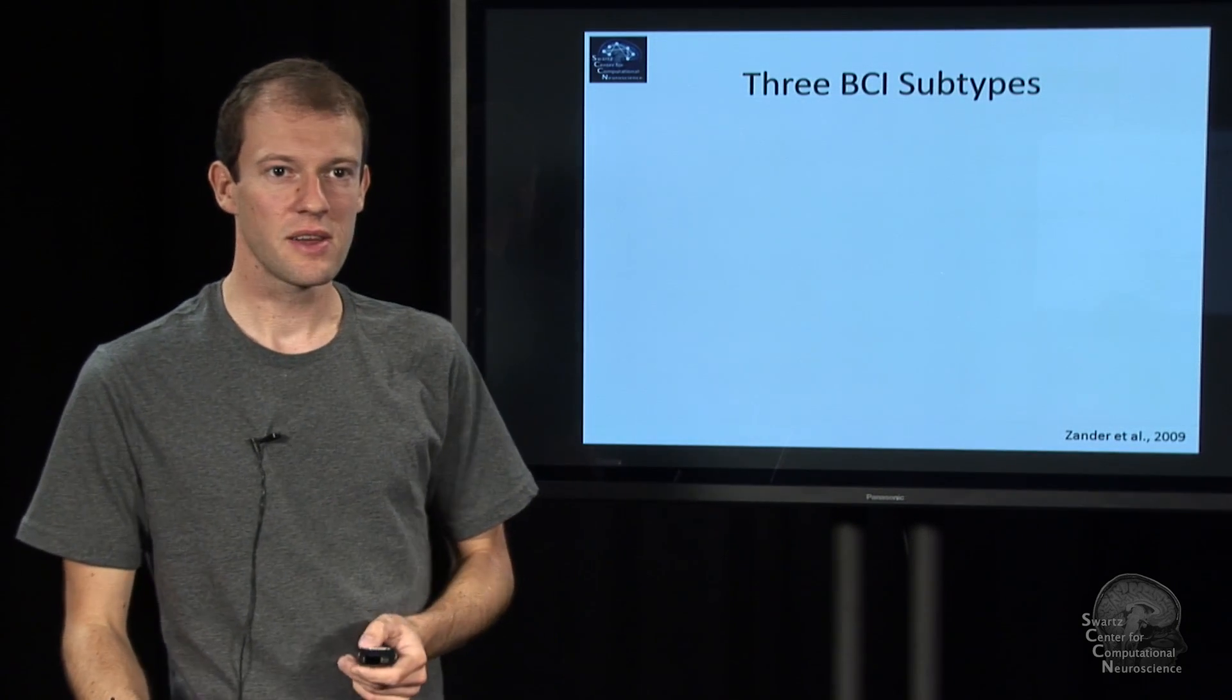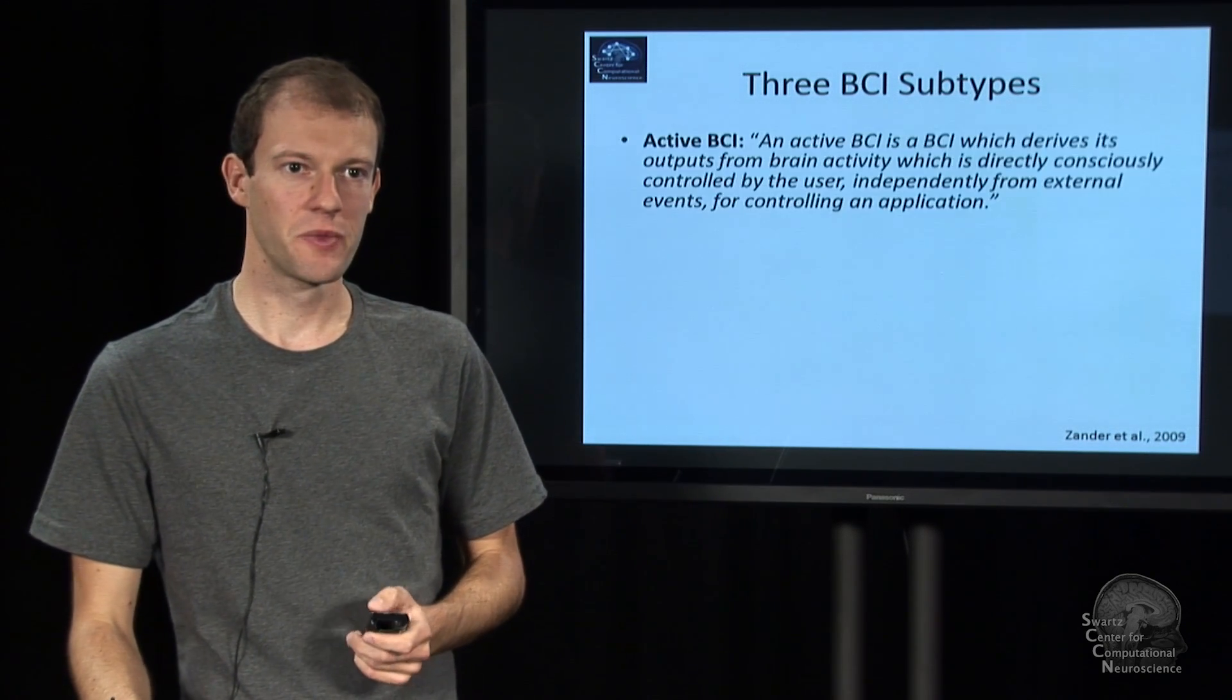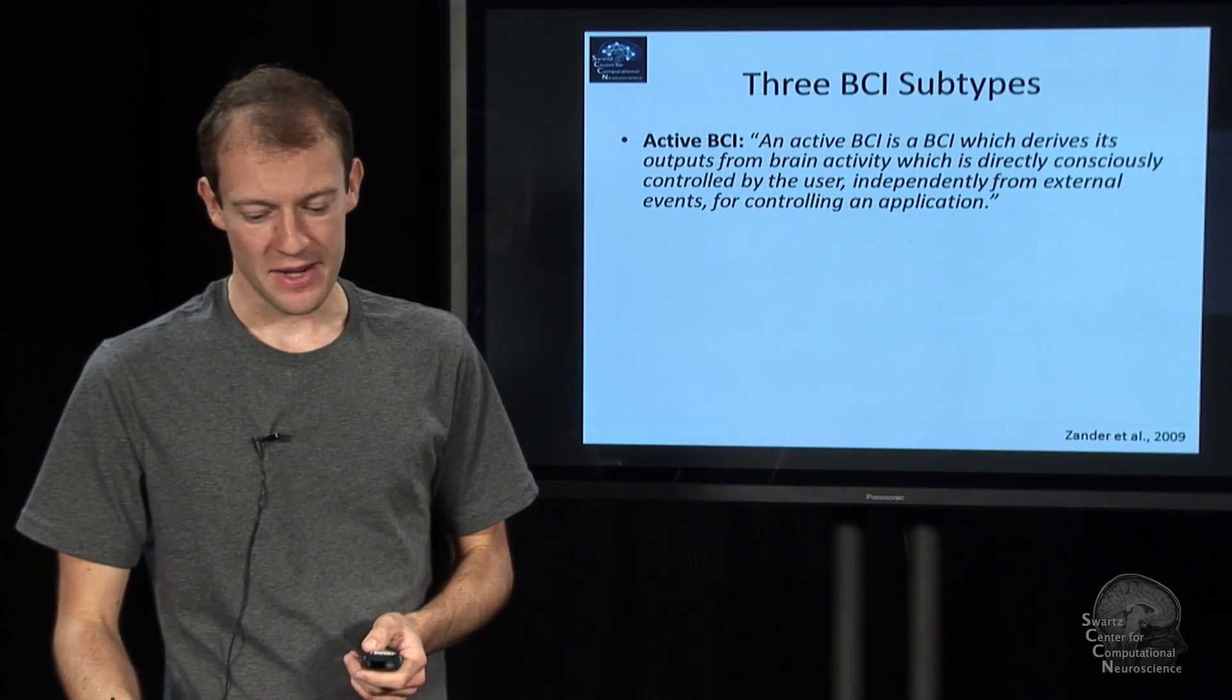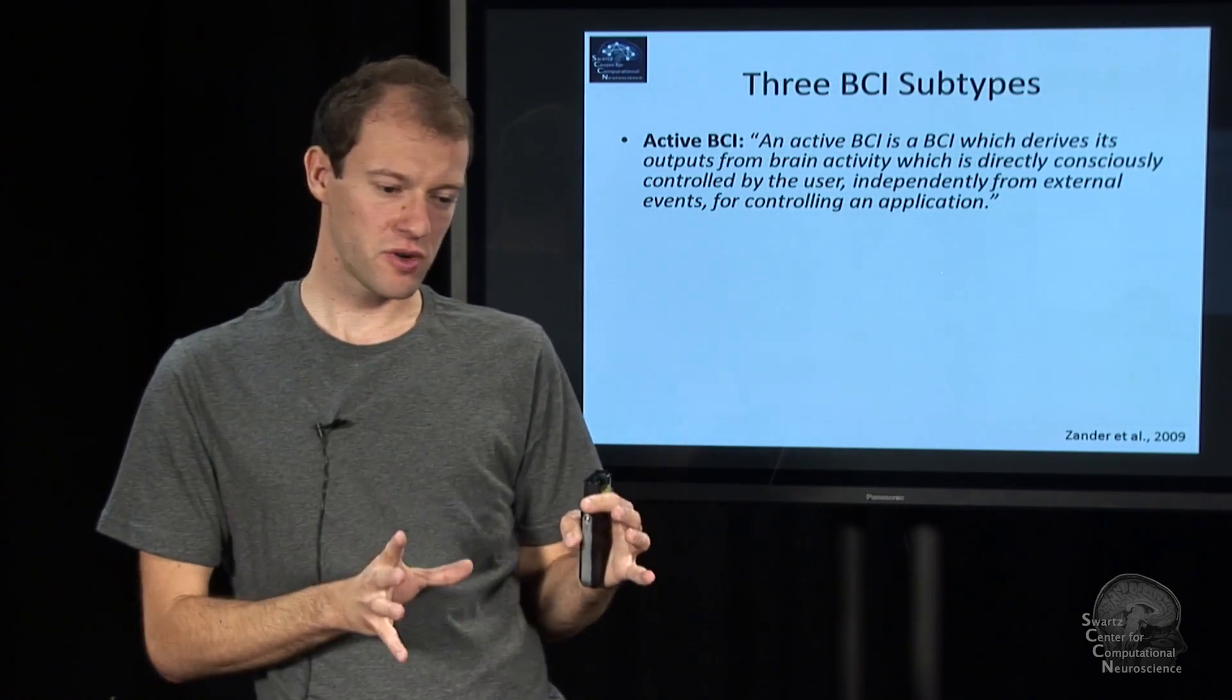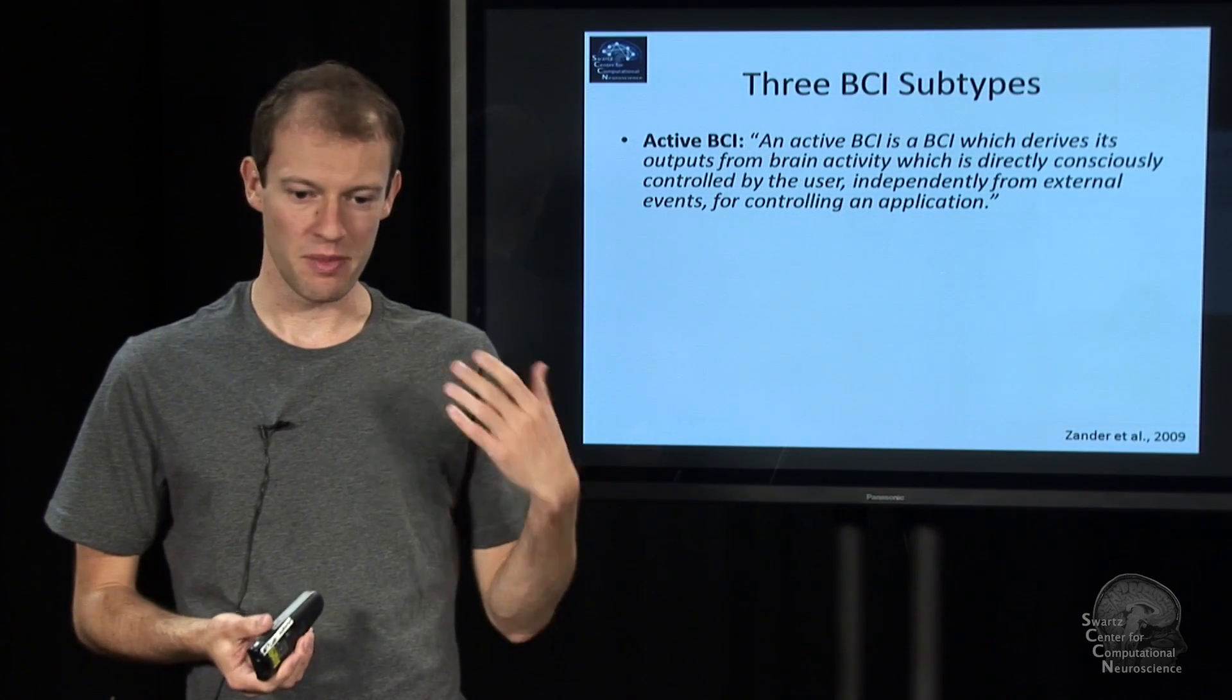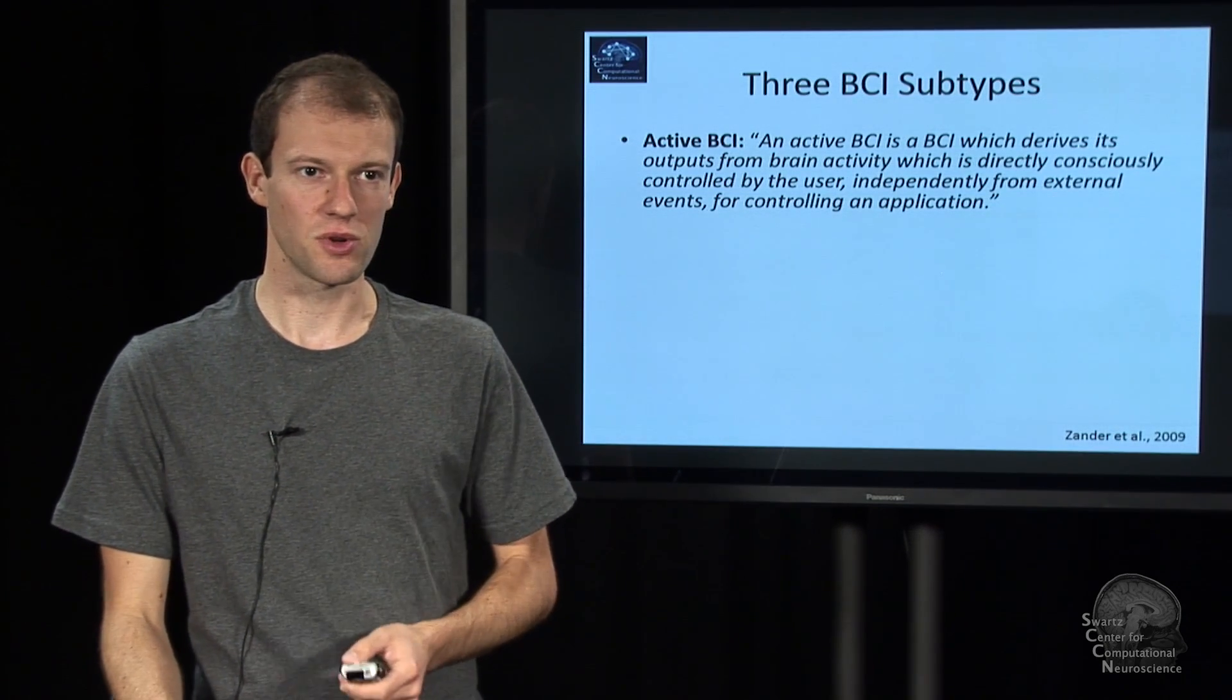We defined these in 2009. You can split up BCIs into three categories. One is the so-called active BCI. And what an active BCI is, is one that you control by conscious voluntary thought. You are focusing on a control thought such as imagining to move your limbs or things like that. And you directly try to manipulate something with that, such as an application.